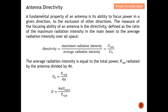A fundamental property of an antenna is its ability to focus power in a given direction to the exclusion of other directions. For example, in a point-to-point delivery scenario, since we know the direction of the receiver, we can focus the antenna to transmit only in that particular direction. This gives the receiver a higher chance of receiving the signal from the transmitter.